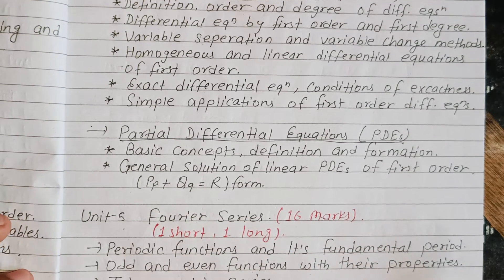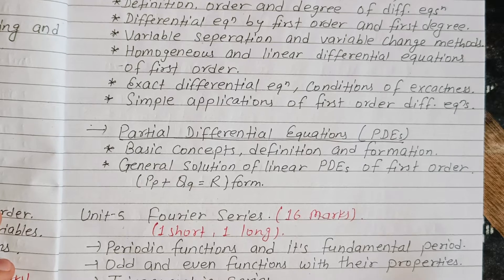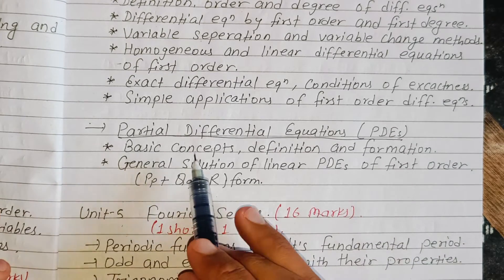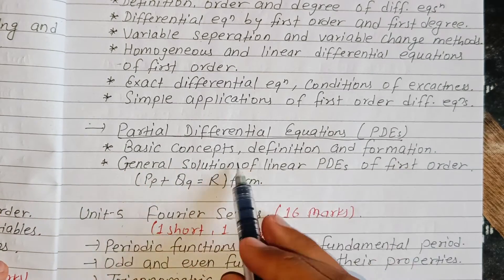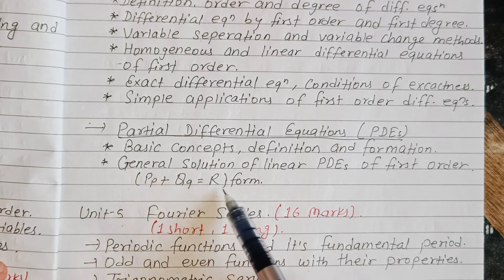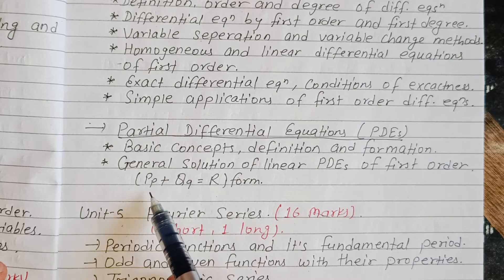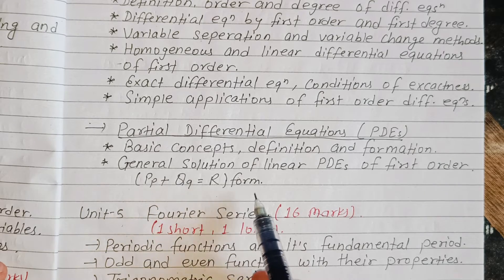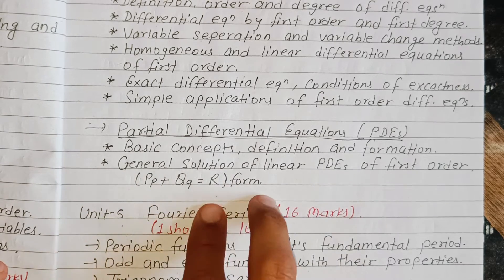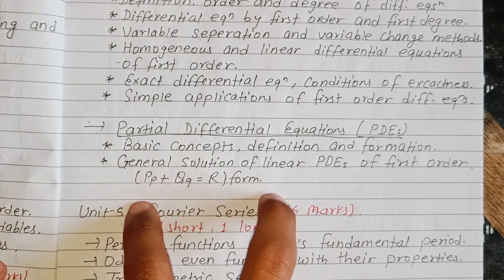Partial differential equations PDE — basic concept, definition. The general solution of linear PDE of first order: PP plus QQ is equal to R for Monge's method, or aP plus bQ is equal to R for Monge's method. Solution numerical bonus.